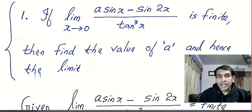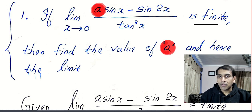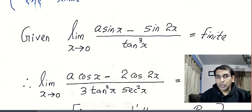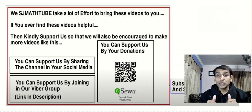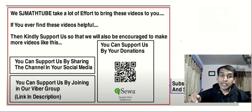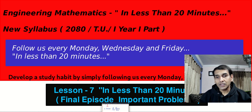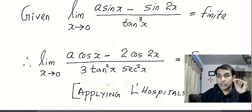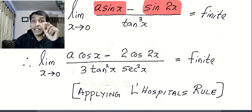There is one more problem and after that we'll wind up the video. This one is a bit different. The limit as x tends to 0 involves an alphabet 'a', the limit is given to be finite, and we are supposed to find that value — so: find the value of a. Since the given limit is finite and it is 0/0, I am applying L'Hôpital's rule. Differentiating: a·cos x minus the derivative of sin x, which is cos x.